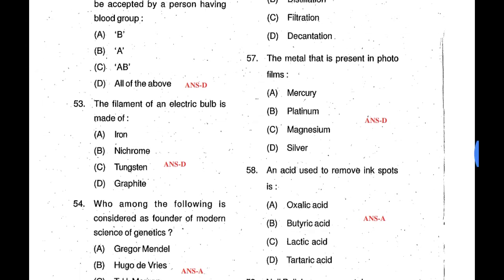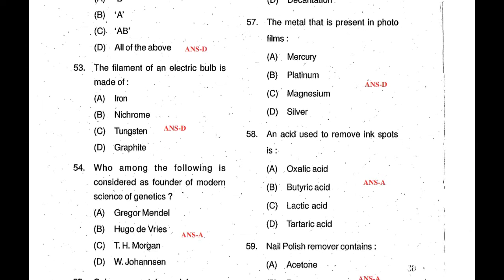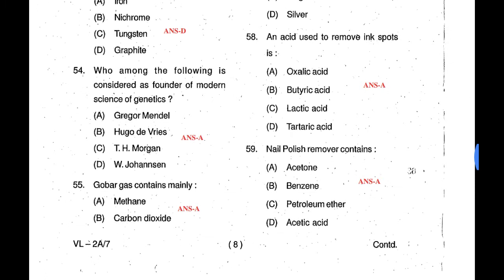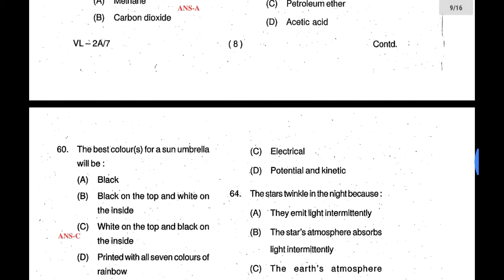Question 59: Nail polish remover contains acetone. To remove nail polish we use a liquid called acetone. Question 60: The best color for a sun umbrella will be white on the top and black on the inside — answer is C.